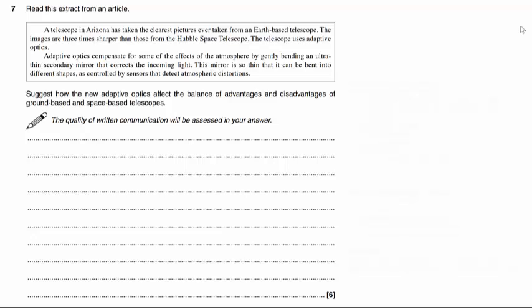Question 7 gives us an extract from an article. It says that a telescope in Arizona has taken the clearest pictures ever taken from an Earth-based telescope. Images are three times sharper than those from the Hubble Space Telescope. The telescope uses adaptive optics. Adaptive optics compensate for some of the effects of the atmosphere by gently bending an ultra-thin secondary mirror to correct the incoming light.